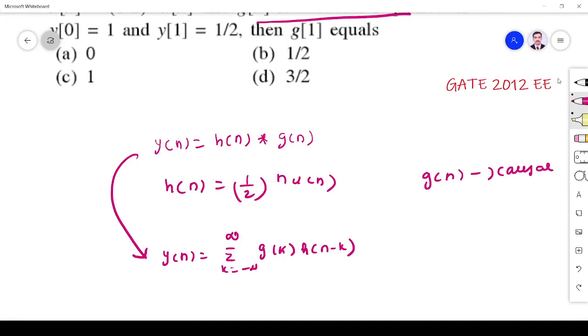So you see what is h of 0. When n you substitute h of 0, 1/2 to the power 0 is 1. h of 1 is 1/2. h of 2 when you substitute n equals 1, 1/2 to the power 1.